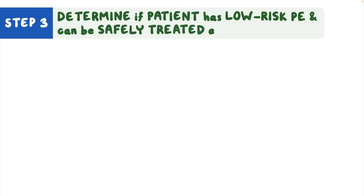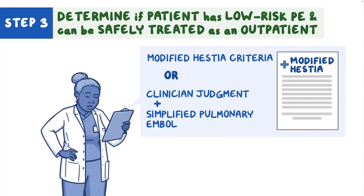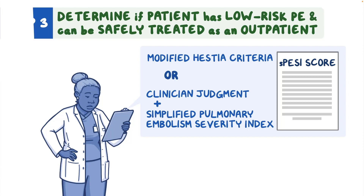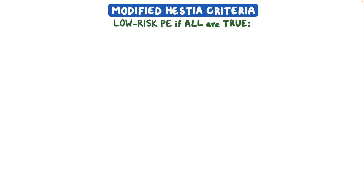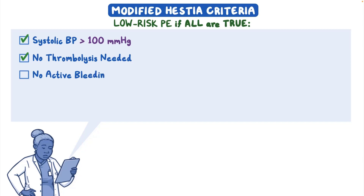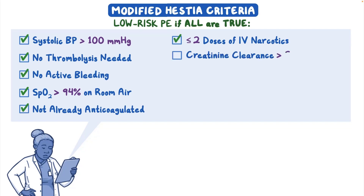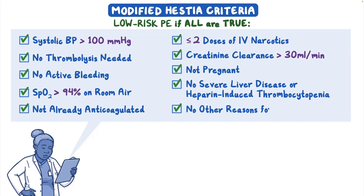Step 3: If the patient does not meet any of the high or intermediate-risk PE criteria, determine if the patient has a low-risk PE and can be safely treated as an outpatient using either the modified Hestia criteria or clinician judgment in conjunction with the Simplified Pulmonary Embolism Severity Index score. According to the modified Hestia criteria, a patient is considered low-risk if: systolic blood pressure is above 100 mmHg, no thrombolysis is needed, there is no active bleeding, oxygen saturation is above 94% on room air, the patient is not already anticoagulated, no more than two doses of IV narcotics were given, creatinine clearance is above 30 mL per minute, the patient is not pregnant, has no severe liver disease or heparin-induced thrombocytopenia, and there are no other reasons for hospital admission.